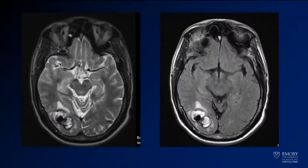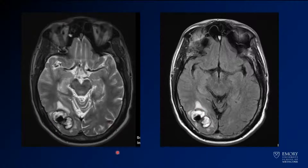Now we're going to take a look at an MR. That biggest hemorrhage in the right occipital lobe — you've got a lot of T2 brightness, kind of a heterogeneous hemorrhage with a little bit of surrounding edema. Maybe a little bit of hemosiderin also back in the left occipital lobe there.